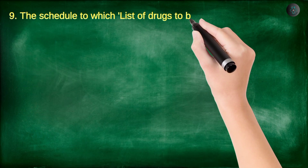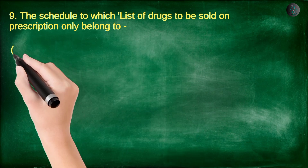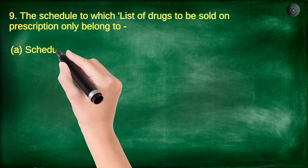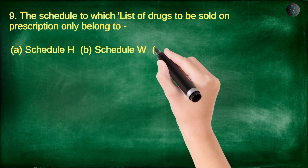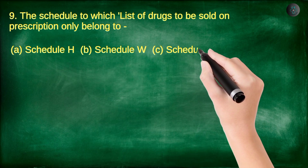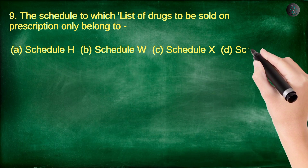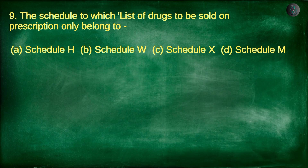Question number 9. The Schedule to which the list of drugs to be sold on prescription only belongs to: A. Schedule H, B. Schedule W, C. Schedule X, D. Schedule M.